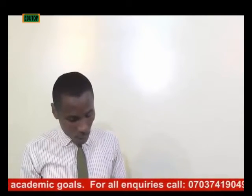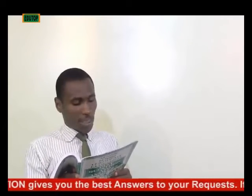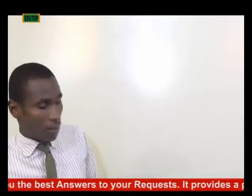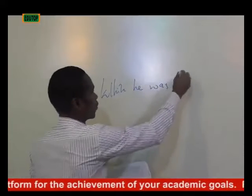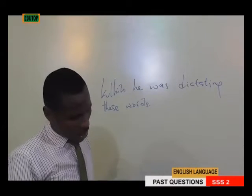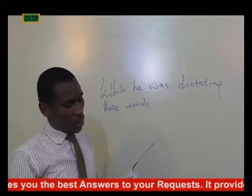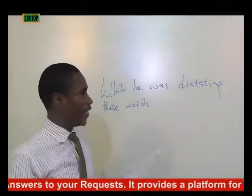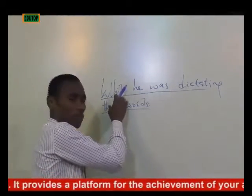The next part, question G, asks: 'While he was dictating these words' — what is the grammatical term used to describe this expression as used in the passage? In the passage it reads: 'While he was dictating these words, the Russians had encircled Berlin.' The question is: what is the grammatical name given to this expression? Whenever you are asked for the grammatical name of an expression, that question simply means: under which part of speech are you going to classify this group of words?